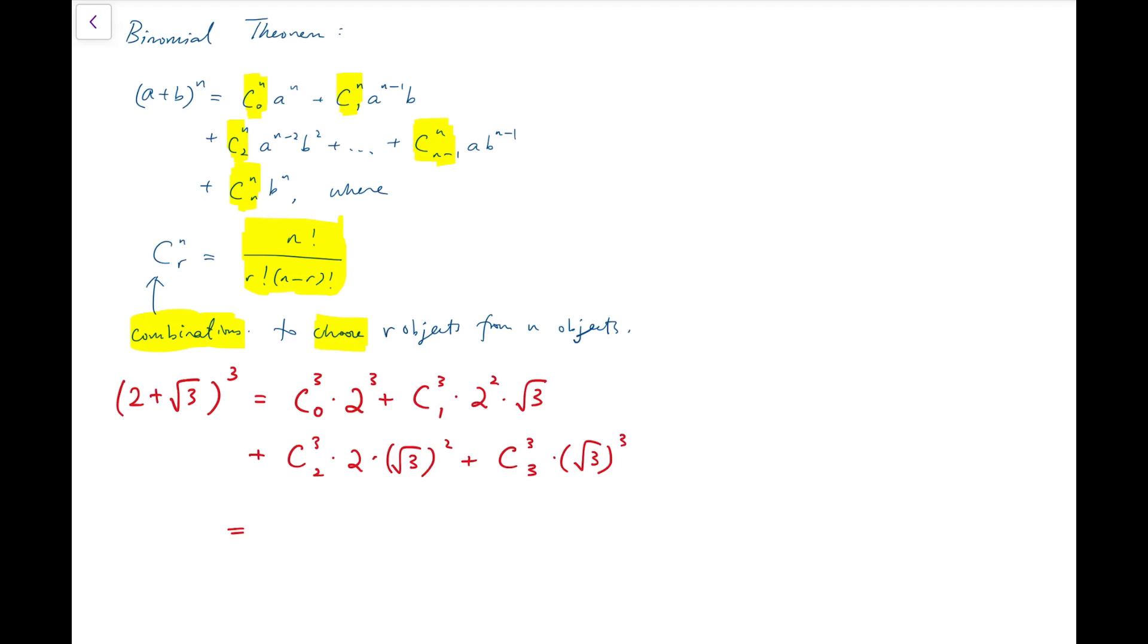By using the definition of nCr, simplifying we have 8 + 3 times 4 times √3, plus 3 times 2 times 3, plus 3√3. And then after calculating we have 26 + 15√3.